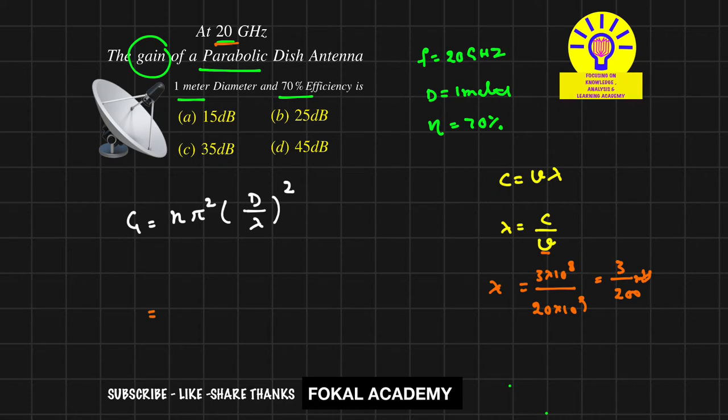Now substitute all the values here. So here eta is given as 70%, that means 70 by 100, that's equal to 0.7. So 0.7 into 22 by 7 whole square, squared, into D is given as 1 meter, so 1 by 3 by 200 whole square.